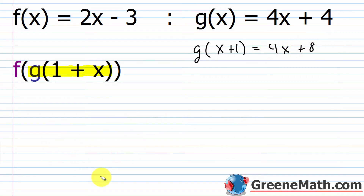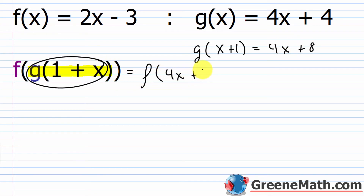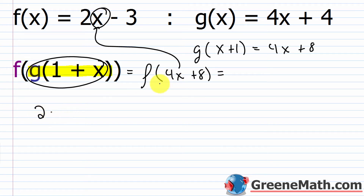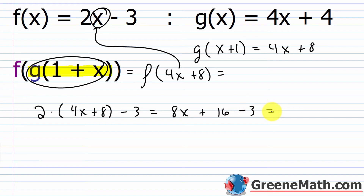Now that I know g of 1 plus x equals 4x plus 8, I can say this problem becomes f of 4x plus 8. I can plug 4x plus 8 in for x in f of x. So this would be 2 multiplied by the quantity 4x plus 8, then minus 3. So 2 times 4x is 8x, and then 2 times 8 is 16, so plus 16, then minus 3. 8x stays as is, and 16 minus 3 is 13. So you get 8x plus 13.